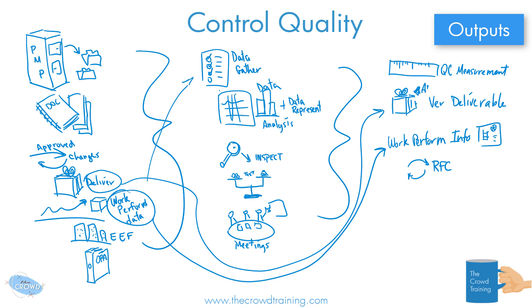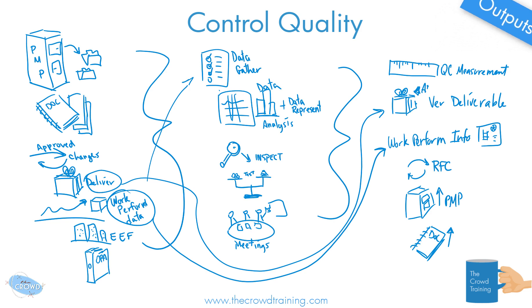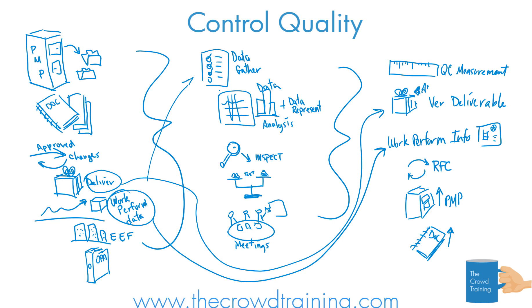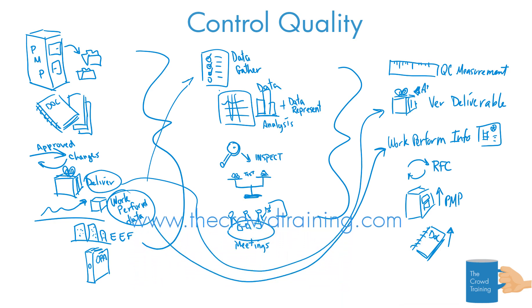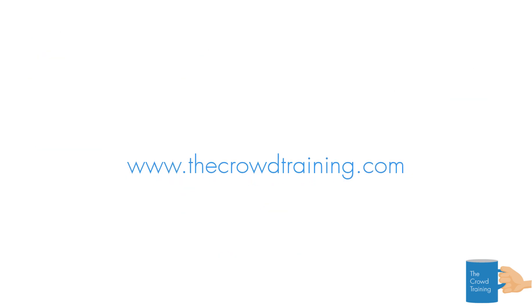And as we are making our way through the quality process, we are updating our documentation and our plans. So there are going to be updates to the PMP — the project management plan — and updates to our project docs as well. Things like if we learn something, we better update the lessons learned. So that, again, is a quick review. We've already gone through all of these, but this is a nice little review of all the inputs, outputs, tools, and techniques of control quality in the sixth edition of the PMBOK from Crowd Training.